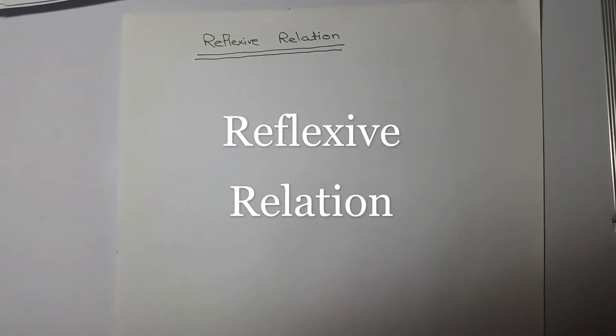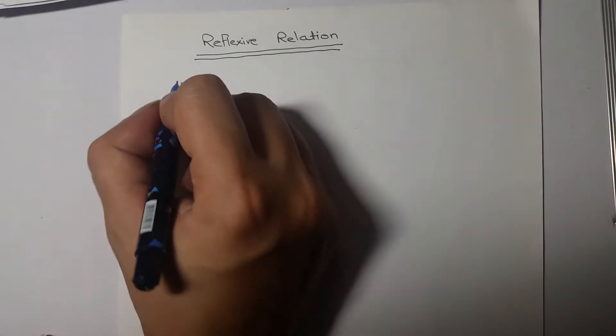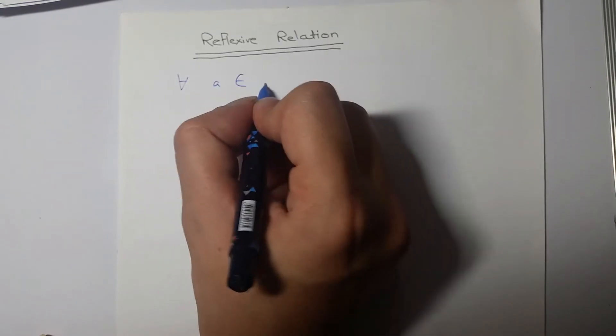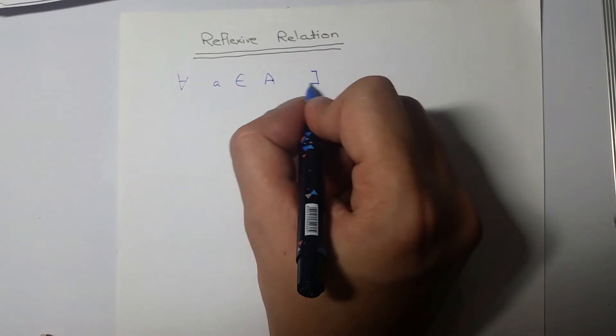Hi everyone, today we learn about reflexive relation. The word reflexive came from the word reflection, which means that every element will be paired with itself. Or to put more mathematically, for every a belongs to set A, there exists the element a related to itself.